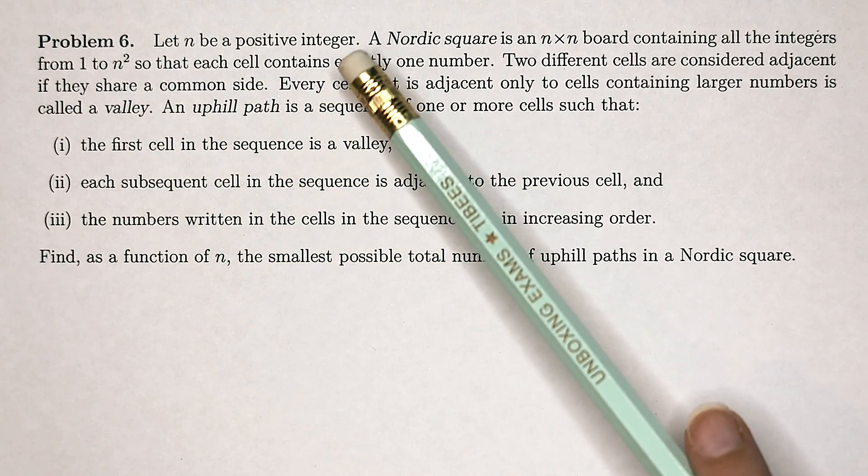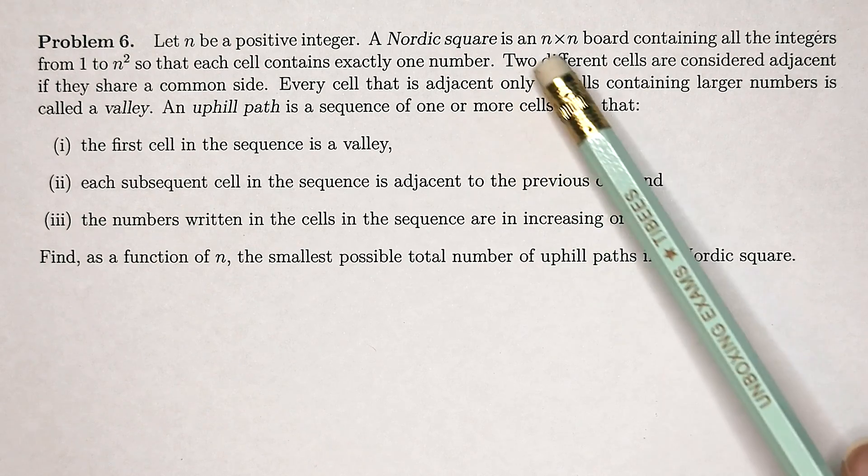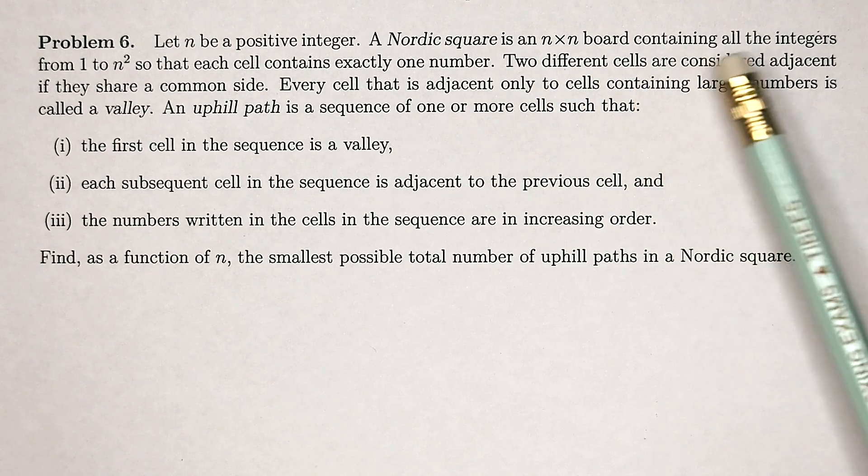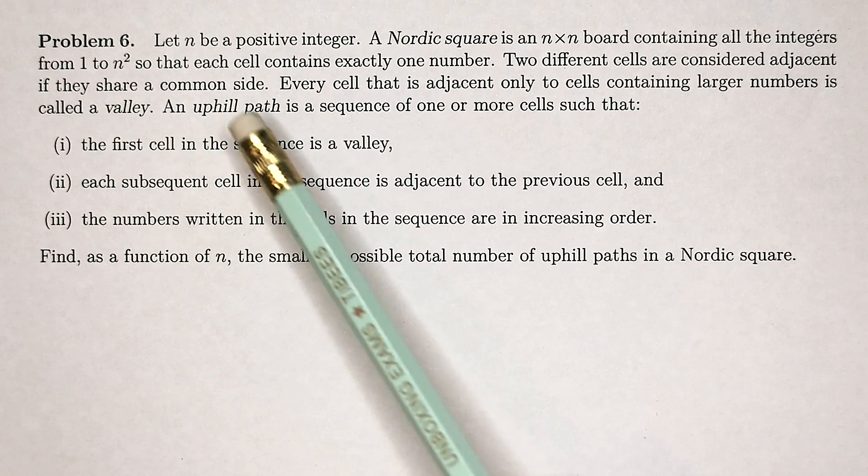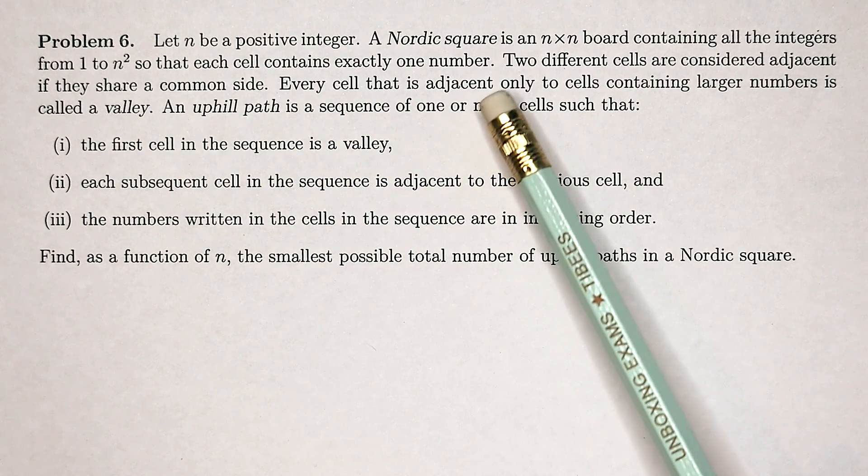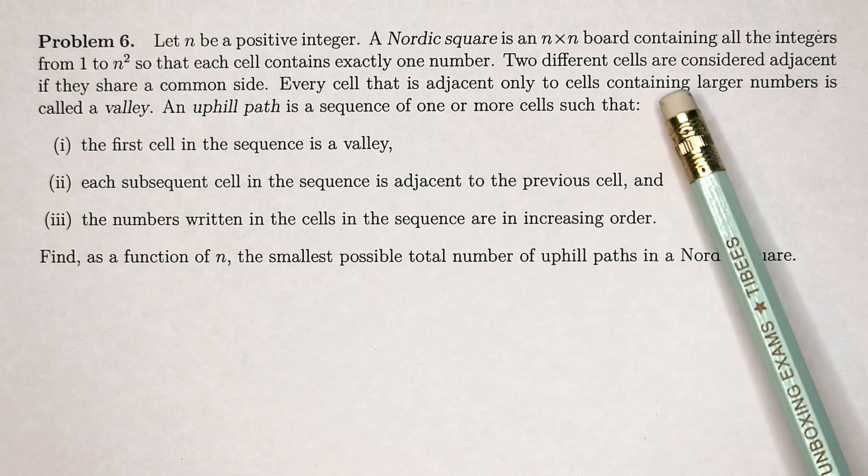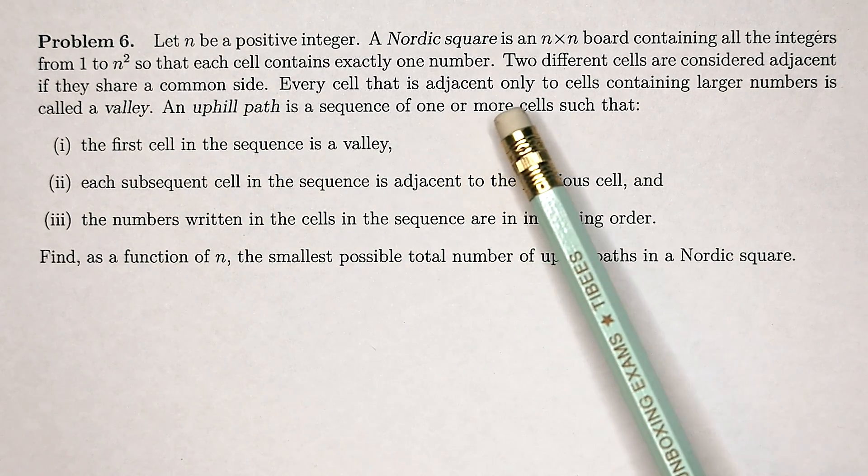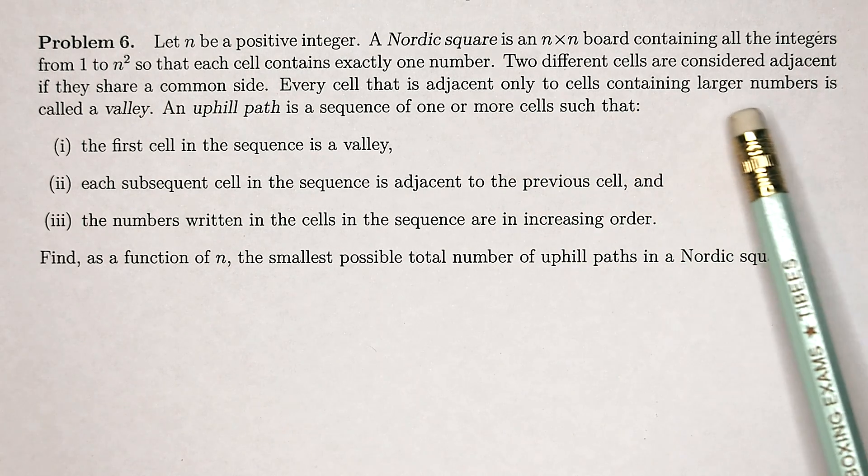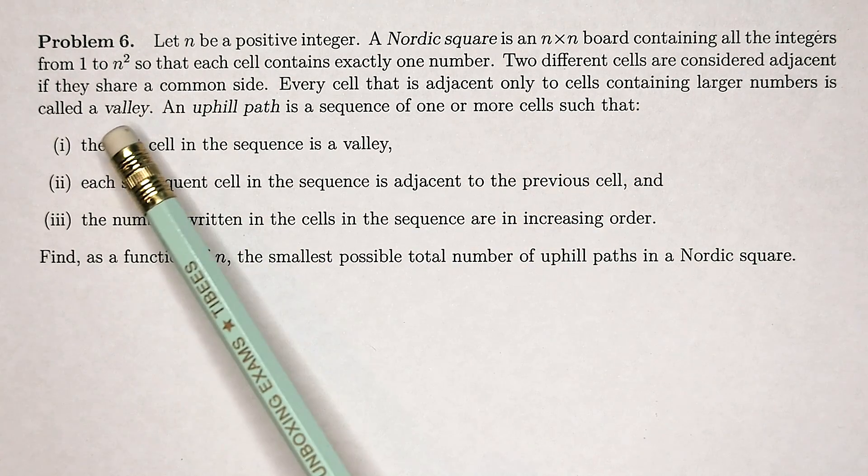Let n be a positive integer. A Nordic square is an n times n board containing all the integers from 1 to n squared so that each cell contains exactly one number. Two different cells are considered adjacent if they share a common side. Every cell that is adjacent only to cells containing larger numbers is called a valley.